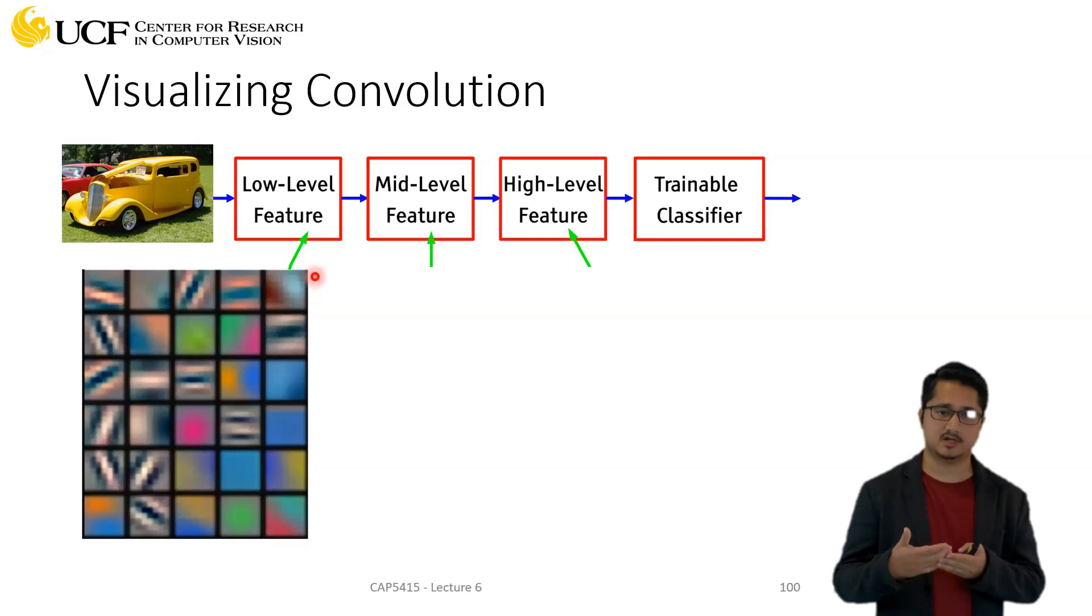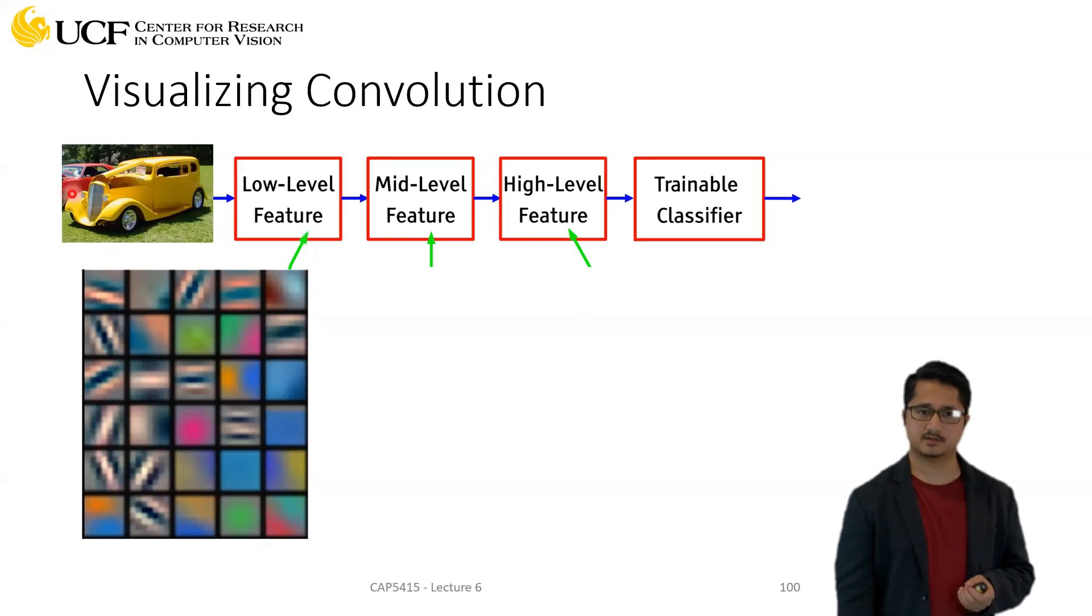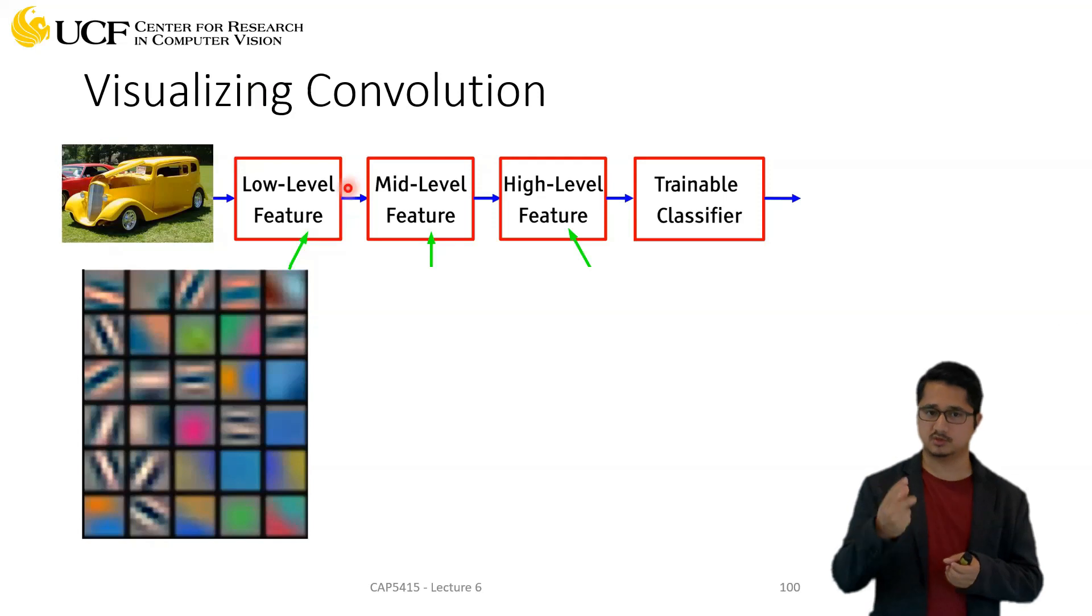What it tries to do is understand what kind of features are being learned by different layers of the network. The idea is, let's say this is your input image. The initial layers, the first few layers of your network, try to learn low level features because those filters are directly operating on your input image. The filter size is usually very small, 3x3 or 5x5. In AlexNet it was 11x11.